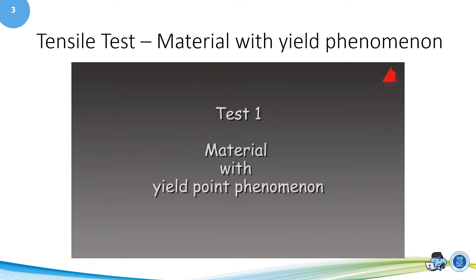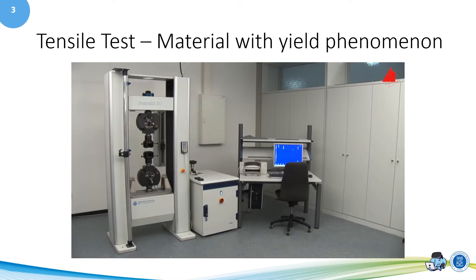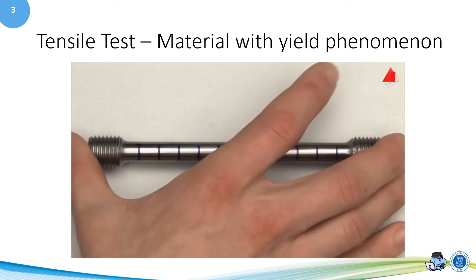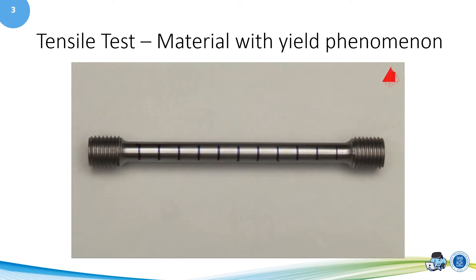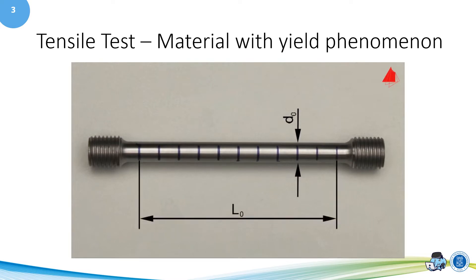The tensile test. First test: material with yield point phenomenon. In the first tensile test, a plain carbon steel with yield point phenomenon is to be tested. This is the test piece. It has a cylindrical test region with an original diameter of 10mm and an original gauge length of 100mm. Within this test region, distance marks have been drawn at regular intervals. They help to visualise and measure the plastic behaviour of the specimen.